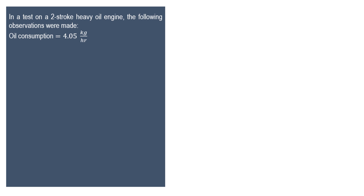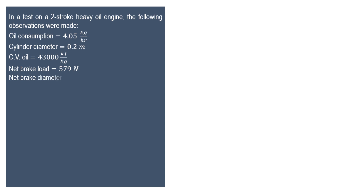Oil consumption is given as 4.05 kg per hour. Cylinder diameter is 0.2 meter. Calorific value of oil is 43,000 kilojoule per kg. Net brake load is 579 newton. Net brake diameter is 1 meter. Indicated mean effective pressure is 275 kilonewton per meter square. Stroke length is 0.25 meter.